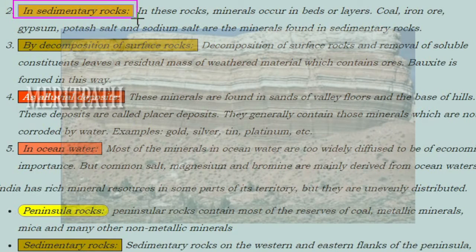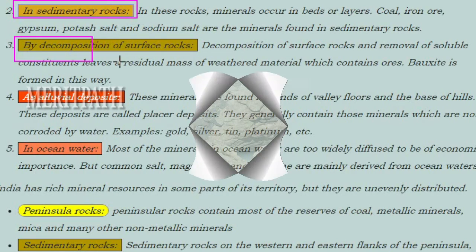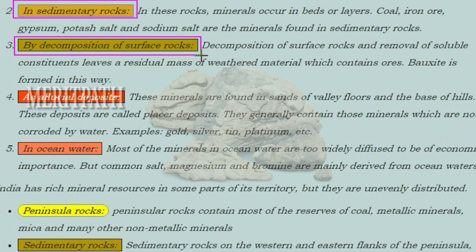Minerals in sedimentary rocks occur in beds or layers. Coal, iron ore, gypsum, potash salt, and sodium salt are minerals found in sedimentary rocks. Occurrence by decomposition of surface rocks: decomposition of surface rocks and removal of soluble constituents leaves a residual mass of weathered material which contains ores.